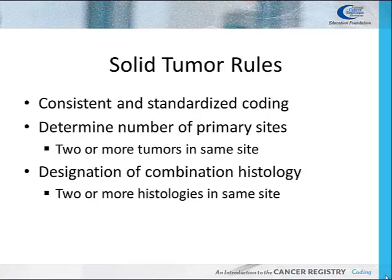The Solid Tumor Rules Manual was developed to promote consistent and standardized coding by cancer registrars. These rules guide the process of determining the number of primary sites or primaries a patient has. At times, a patient may have multiple primaries — more than one cancer at the same time or throughout their lifetime. The cancer registrar must complete an abstract for each cancer primary a patient has. The solid tumor rules also assist the cancer registrar in assigning the correct histology code, especially when the patient's tumor has multiple or a combination of histologies.